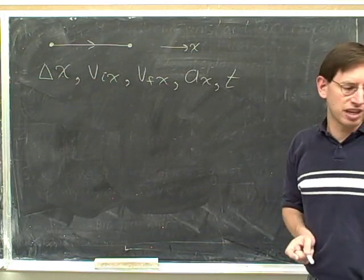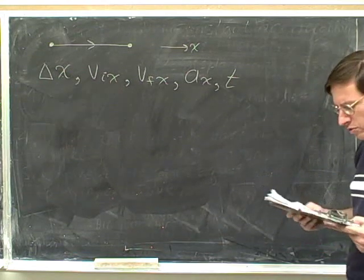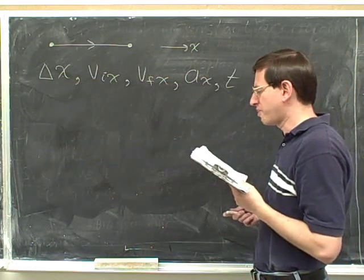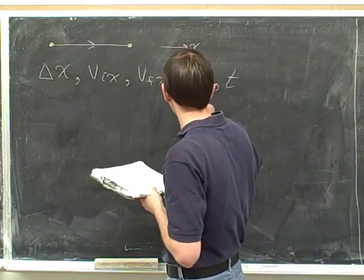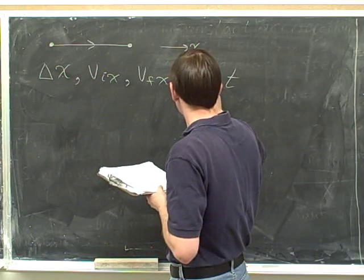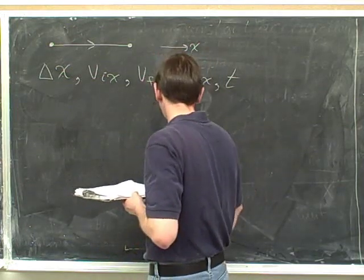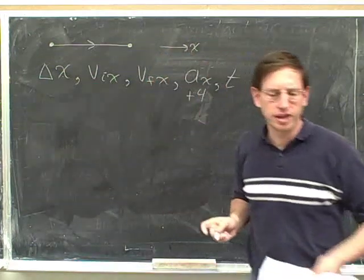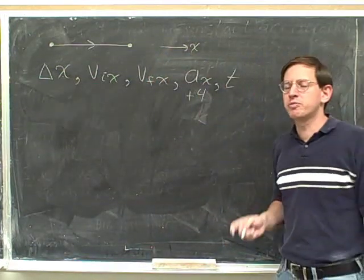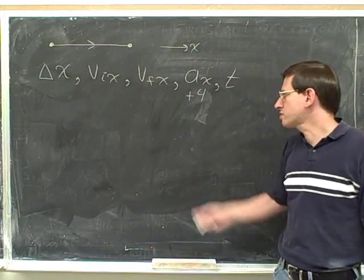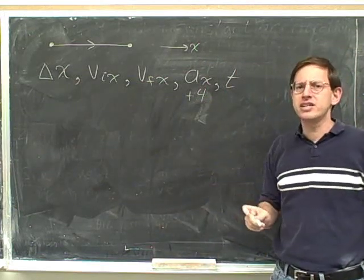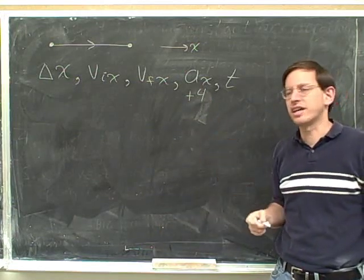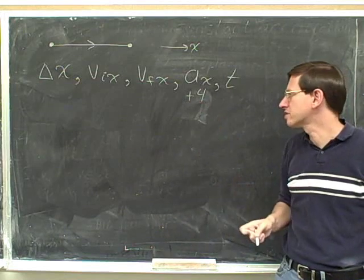What I mean by write down the givens is to write down the numbers we've been given. We were given an acceleration of positive 4 meters per second squared, so let's write that down as plus 4. Remember, if you just wrote down 4, that's not good — get into the habit of writing plus signs in front of any positive value. So write plus 4, not just 4.